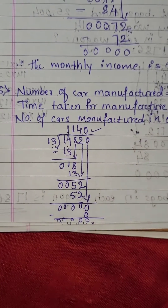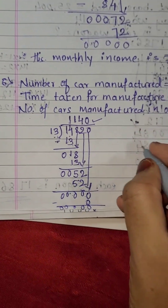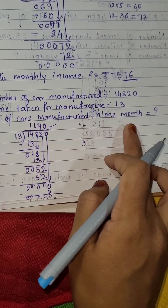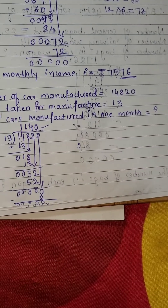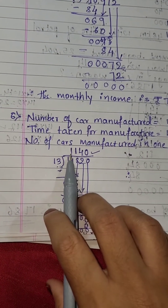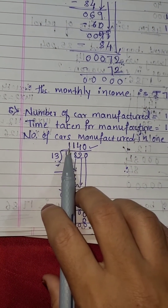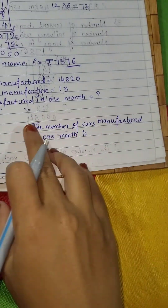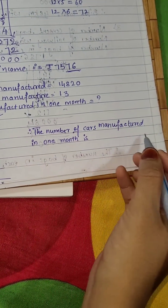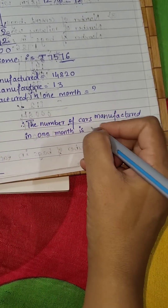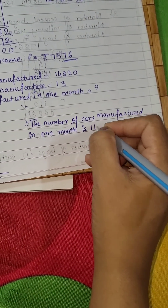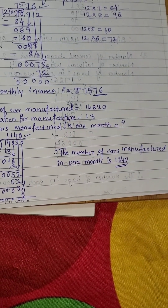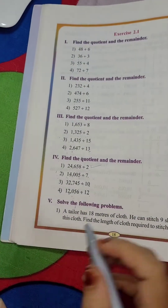So your answer is 1,140. Therefore, the number of cars manufactured in one month is 1,140 cars. This is your answer.